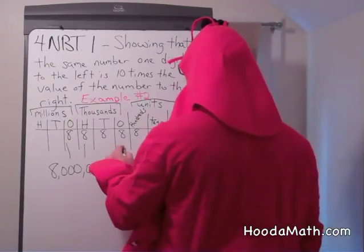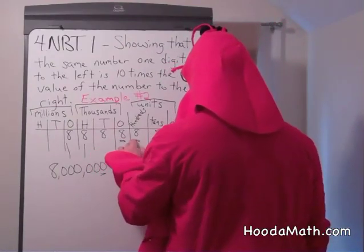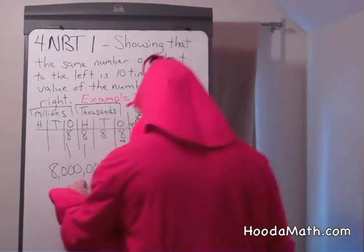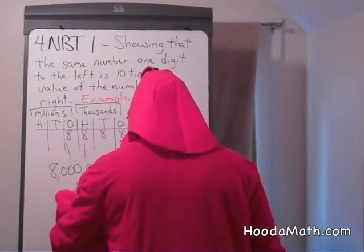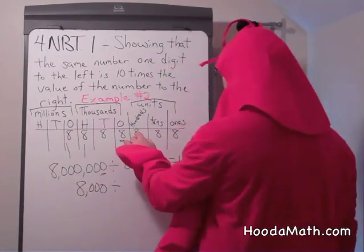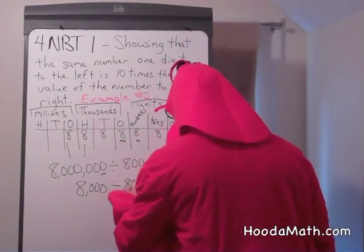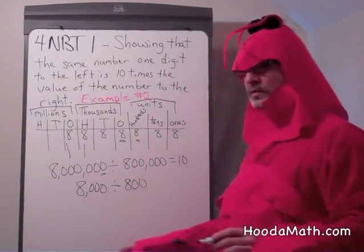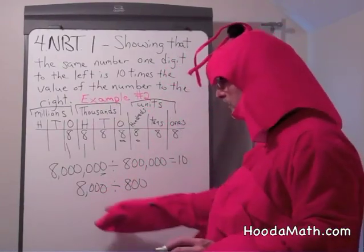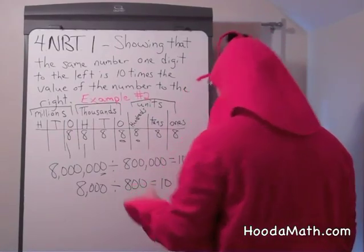Let's pick another number. What about this number here and this number here? This is 8,000 divided by 800. Once again, you can see there's one extra zero in the 1,000, so it's easy to divide and you get 10.